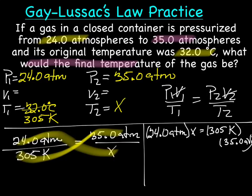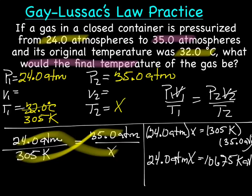Cross multiply. And that gives us 24.0 atm times x equals 305K times 35.0 atm. So let's multiply. So now we have 24 atmx equals 10675K atm. And to get the x by itself, we'll divide both sides by 24 atm.